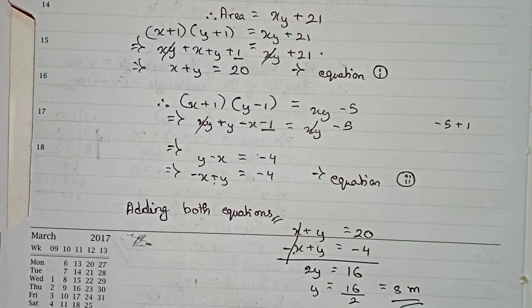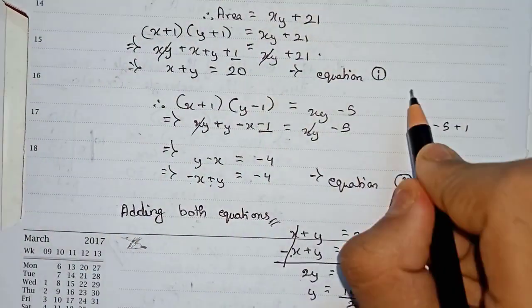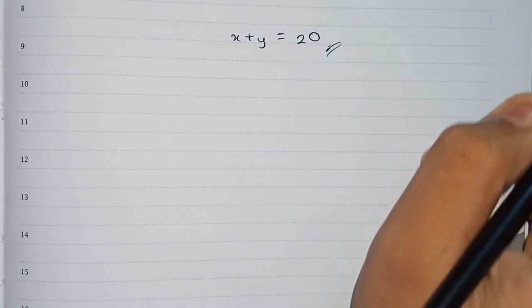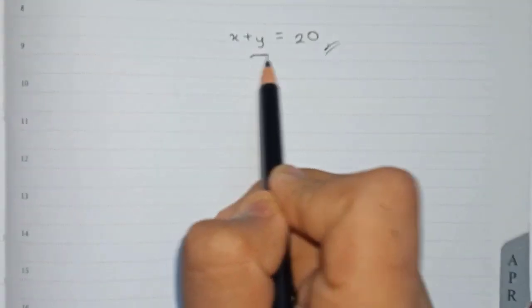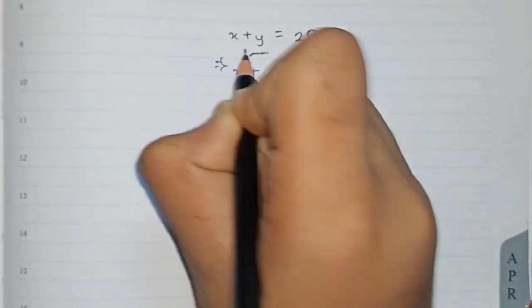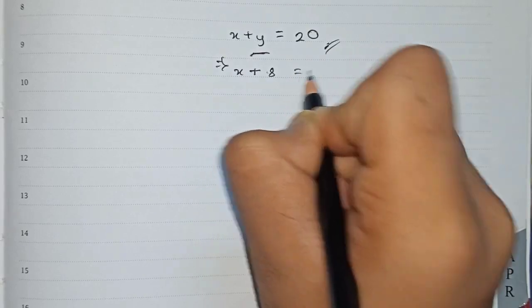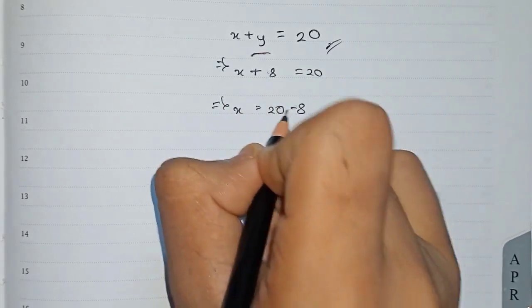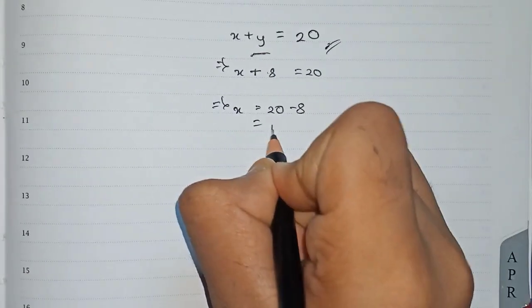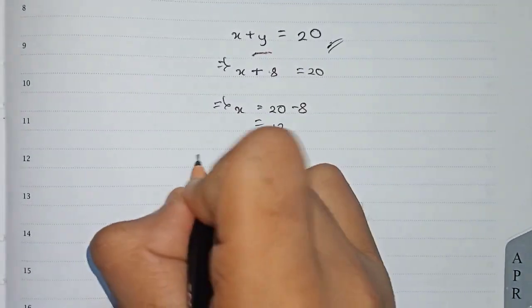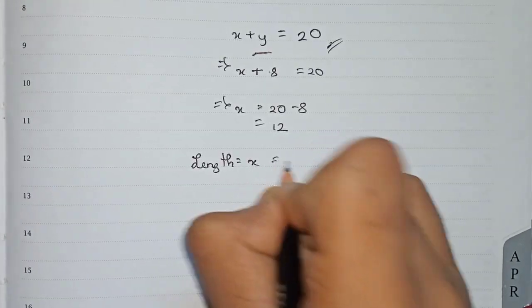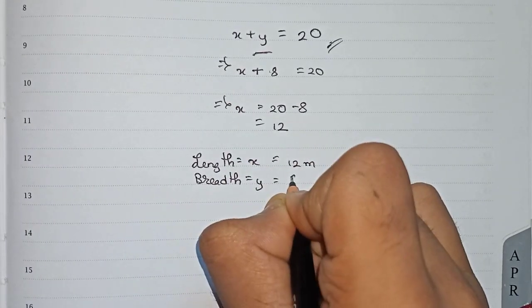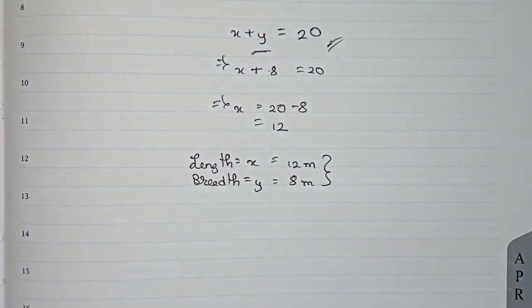Now with y = 8, we find x using equation number 1: x + y = 20. Substituting y = 8 gives x + 8 = 20, so x = 20 - 8 = 12. Therefore the length x is 12 meters and the breadth y is 8 meters.